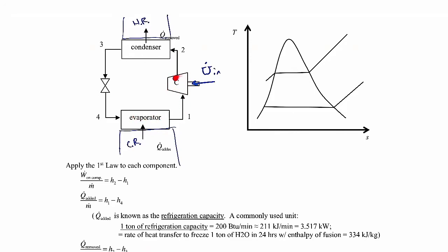The compressor increases the temperature of the working fluid. We want to do that because when we move into the condenser, we want the temperature of the working fluid to be higher than the temperature in the hot reservoir, so that we get heat transfer into the hot reservoir. After coming out of the condenser and going through the throttling valve, its purpose is to decrease the temperature sufficiently so that it's very cold going into the evaporator, facilitating heat transfer from the cold region into the working fluid.